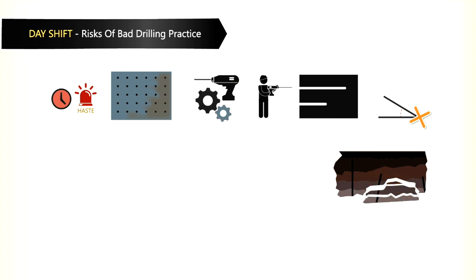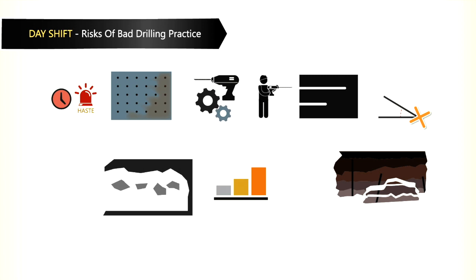Drilling at the wrong angles will increase the possibility of fall of ground incidents. The fall of ground incidents are the single main cause of fatality incidents underground.